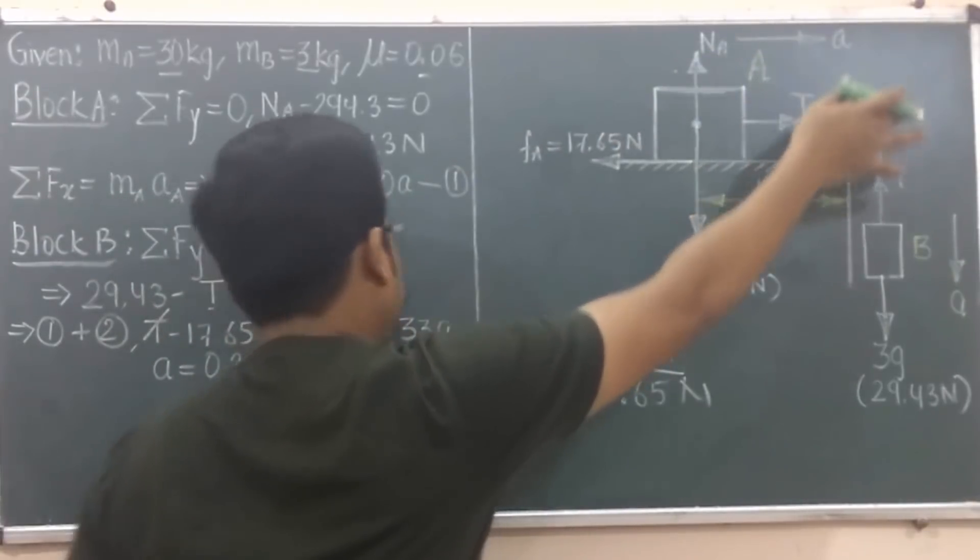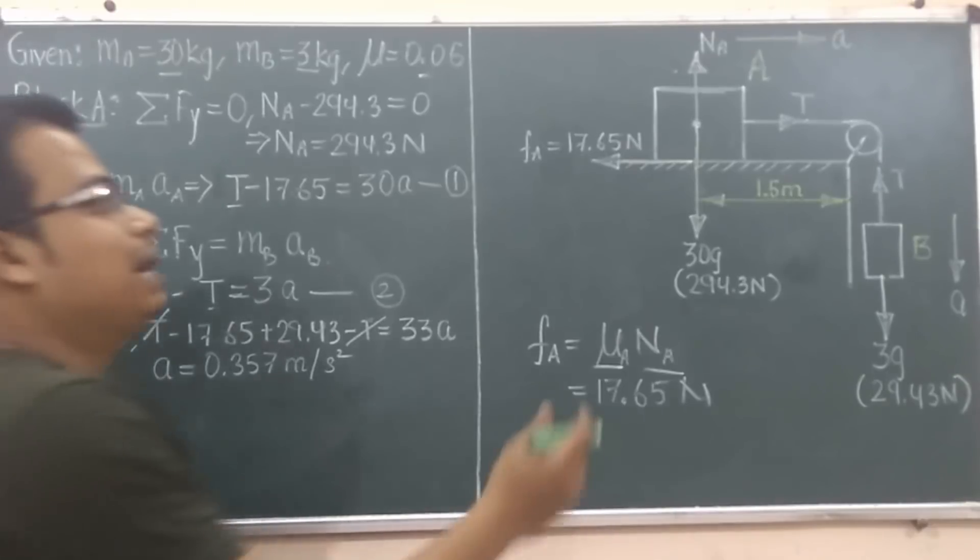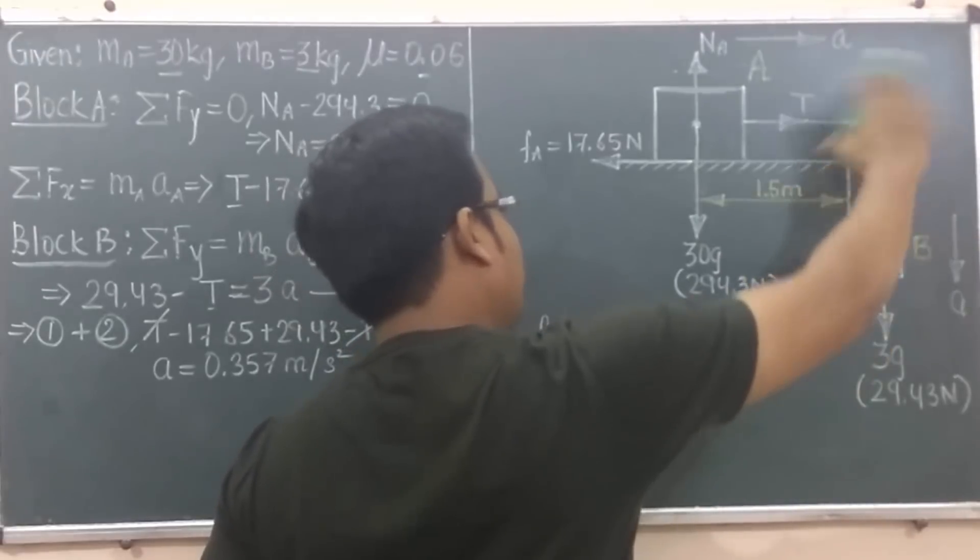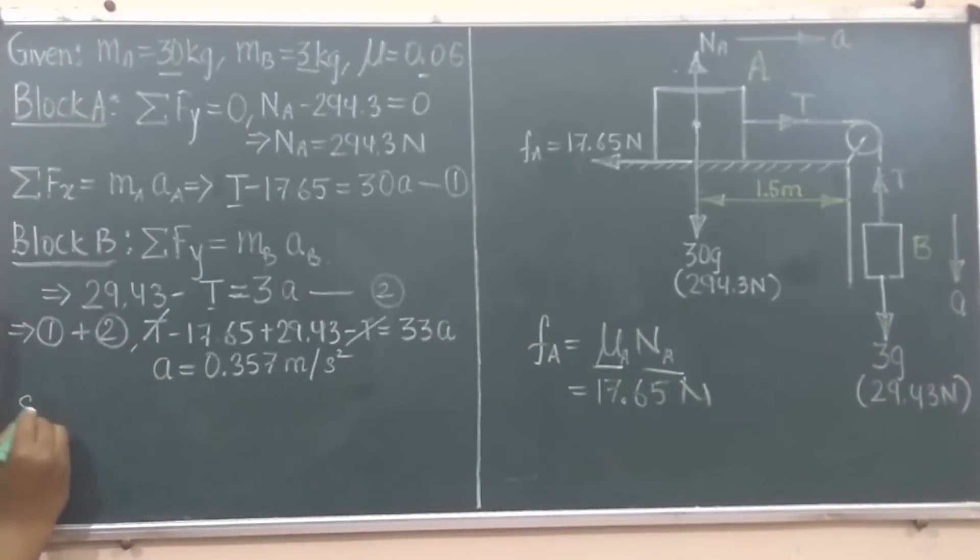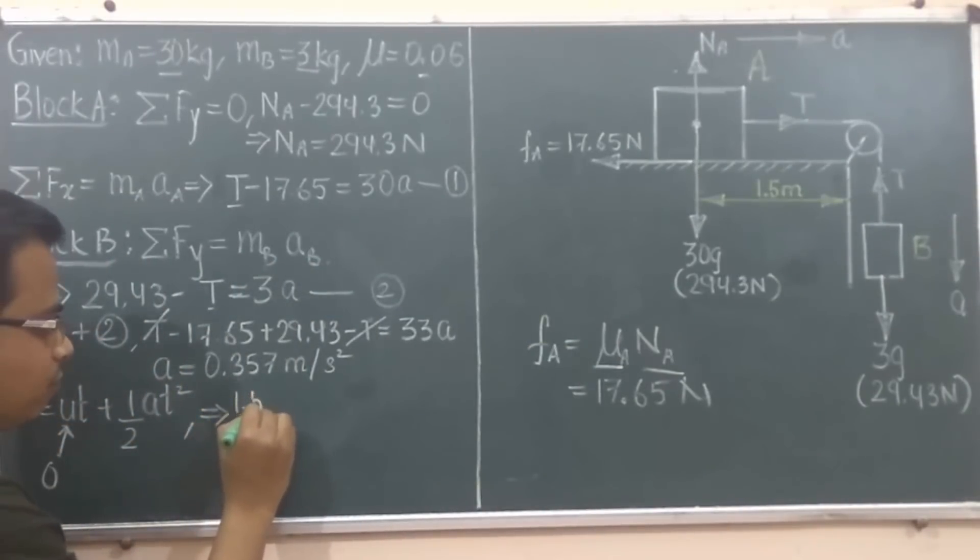This portion is over, we know with what acceleration this block is moving in the right-hand side direction, and that's 0.357. Now we need to find the time taken by this block A to reach here, that's exactly the time when it's going to fall over. So we have s equals ut plus half a t squared. Initially everything was at rest, that means this initial velocity will be taken as 0. So let me write this: s is the distance traveled, how much? It's 1.5, so 1.5 equals 0 into t is 0...